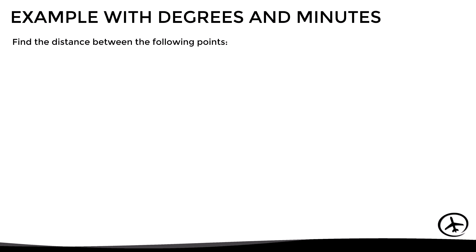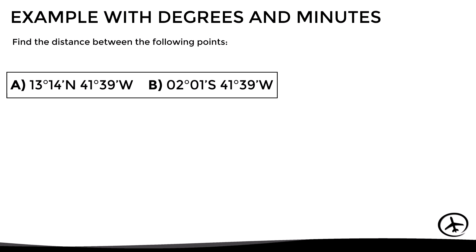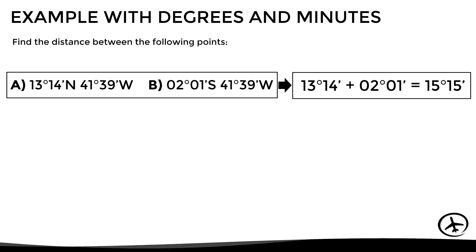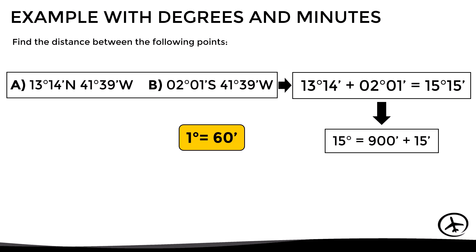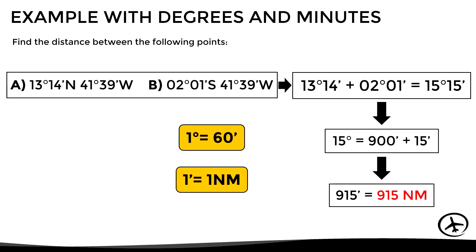Let's look at another example using degrees and minutes. In this case both points are on the same meridian, which is 41 degrees and 39 minutes west. To obtain the difference in latitude we just add them, which results in 15 degrees and 15 minutes. If we convert 15 degrees to minutes we obtain 900 minutes, plus the remaining 15 minutes, which means that the distance between both points is 915 nautical miles.